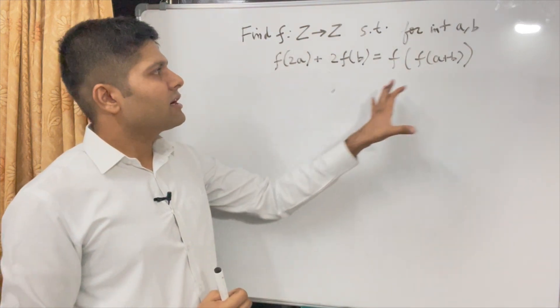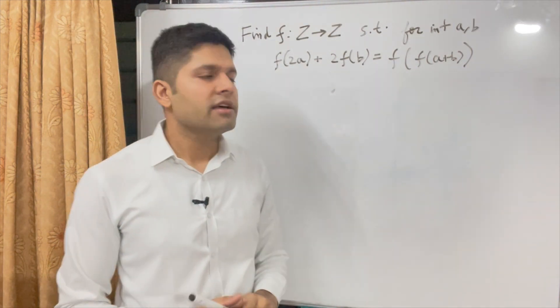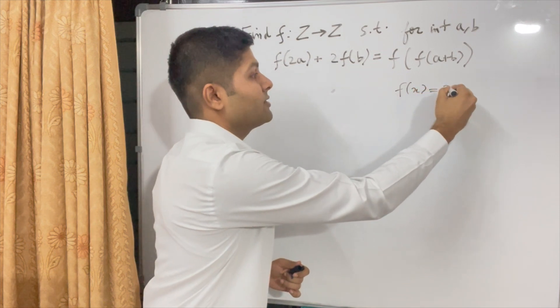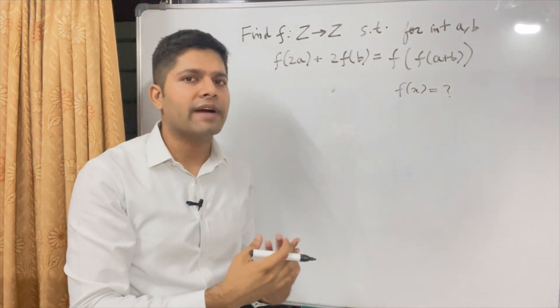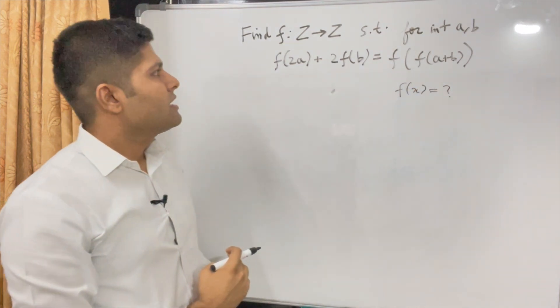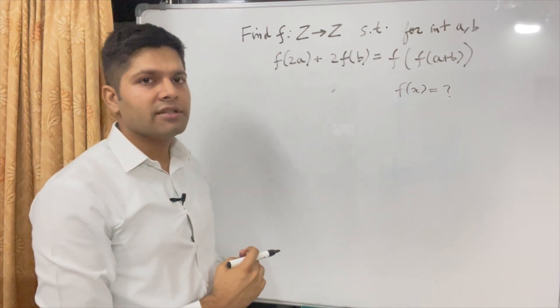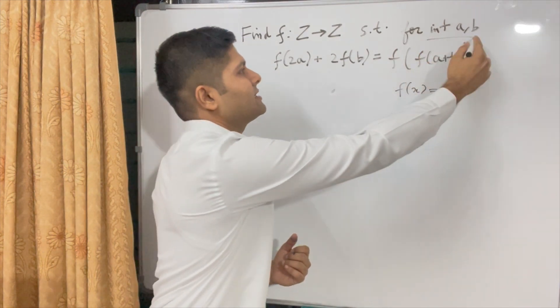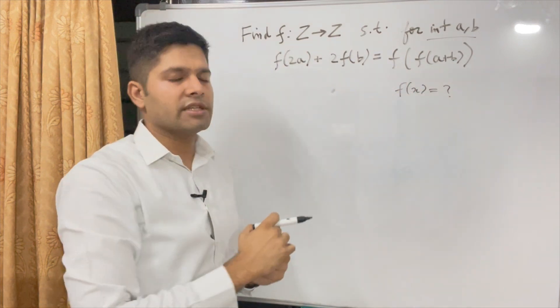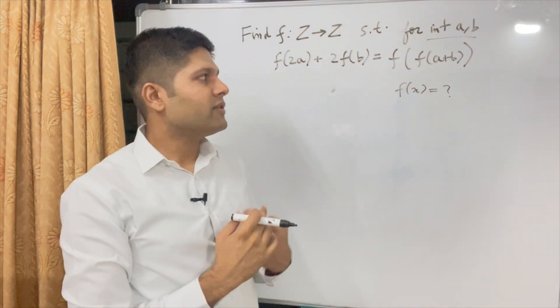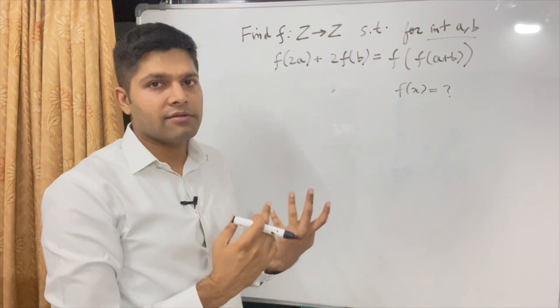So whenever you come across a question like this your goal should be to somehow write this equation in terms of f(x) because that is what we are supposed to find. We don't have much information, we just know that these numbers are integers and we are given one general equation. So one good approach in such questions is to find f(0).